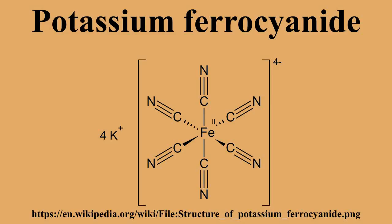Potassium ferrocyanide can be used as a fertilizer for plants. Prior to 1900 AD, before the invention of the Kastner process, potassium ferrocyanide was the most important source of alkali metal cyanides. In this historical process, potassium cyanide was produced by decomposing potassium ferrocyanide.